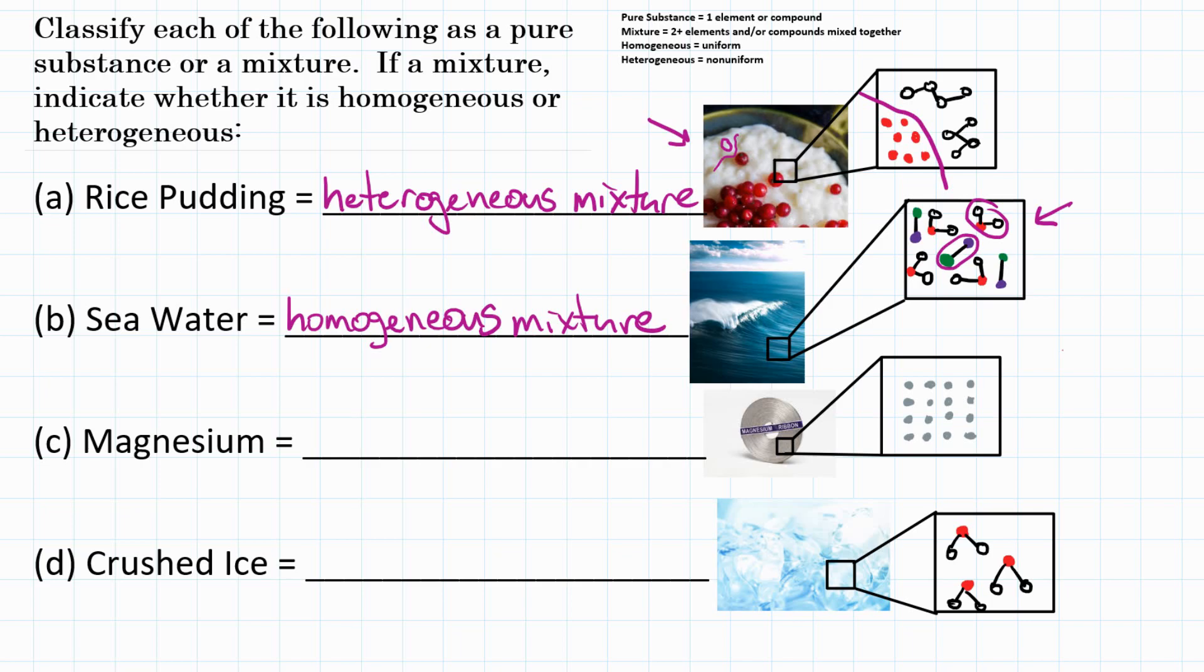If we zoomed in and looked at some magnesium ribbon, looked at the individual atoms of that magnesium, we would only see one type of atom present. We wouldn't see anything else. So that means magnesium is a pure substance, specifically an element.